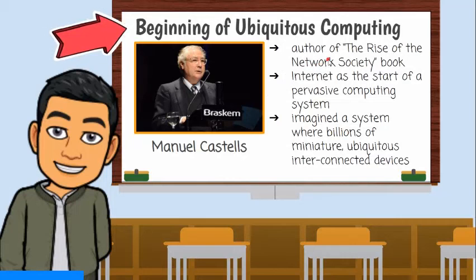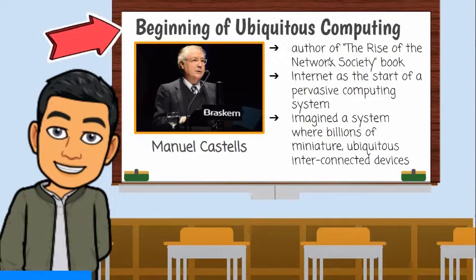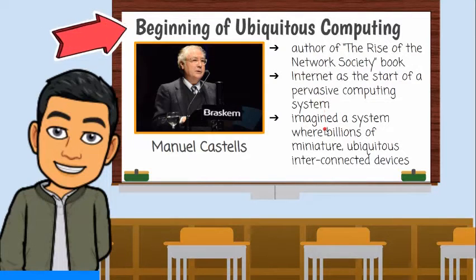Another known personality in this concept is Manuel Castells. He suggested in his book, The Rise of the Network Society, that there is an ongoing shift from already decentralized, standalone microcomputers and mainframes towards entirely pervasive computing. In his model of a pervasive computing system, Castells used the example of the internet as the start of a pervasive computing system. He imagined a system where billions of miniature, ubiquitous interconnected devices will be spread.